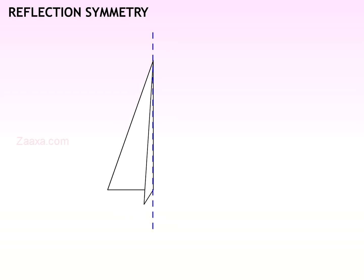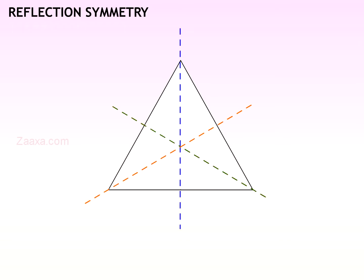Some shapes have more than one axis of symmetry. For example, an equilateral triangle has three axes of symmetry.